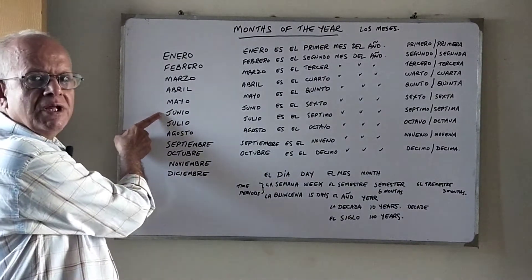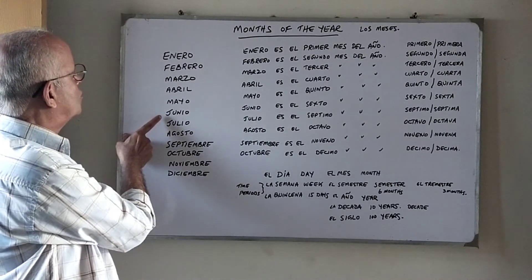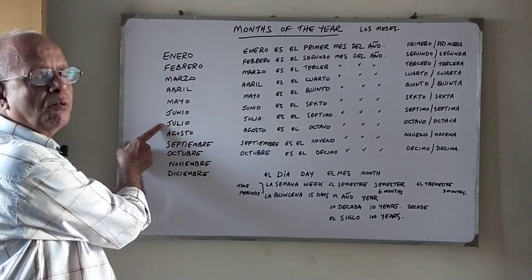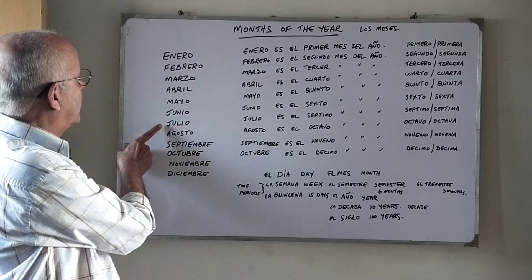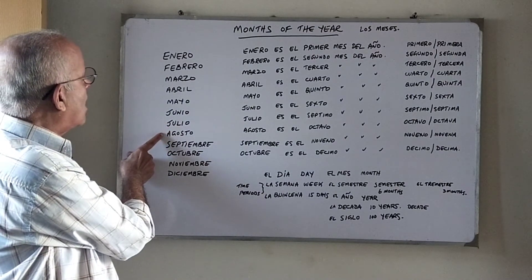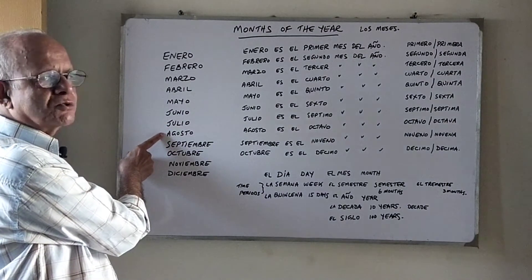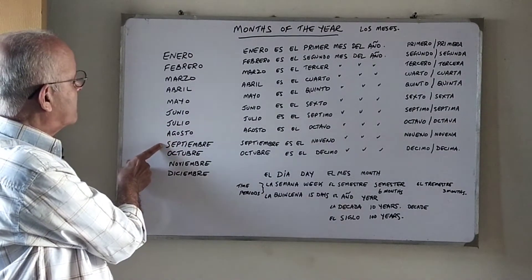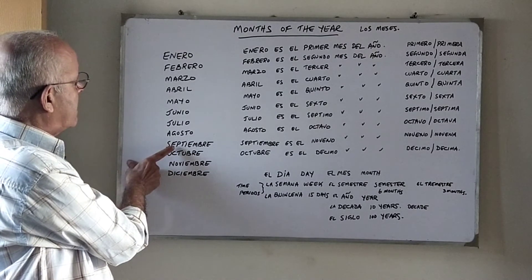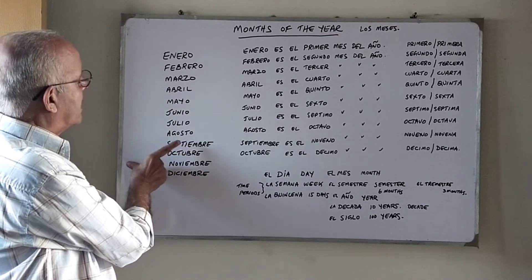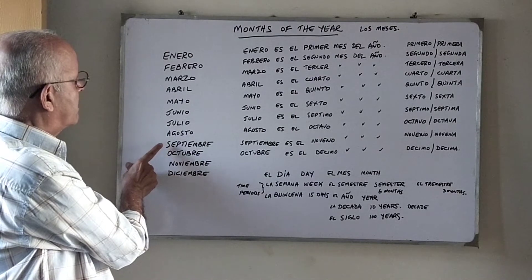Junio, Junio — June. Julio, Julio — July. Agosto — August. Septiembre, septiembre — September.